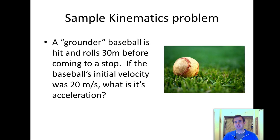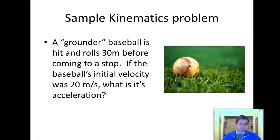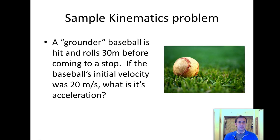A grounder is a baseball that's hit on the ground and rolls the entire way. A grounder baseball is hit and rolls 30 meters before coming to a stop. If the baseball's initial velocity was 20 meters per second, what is its acceleration?